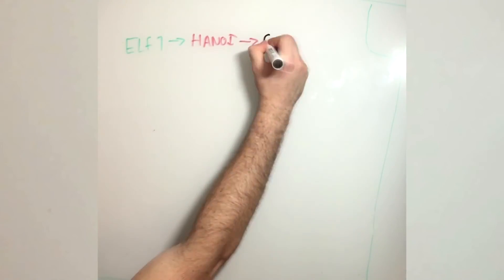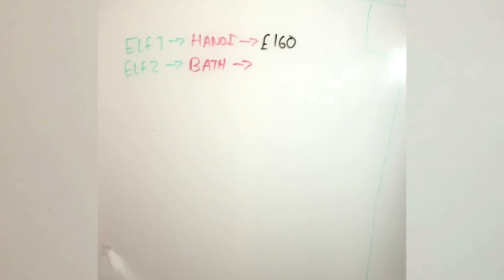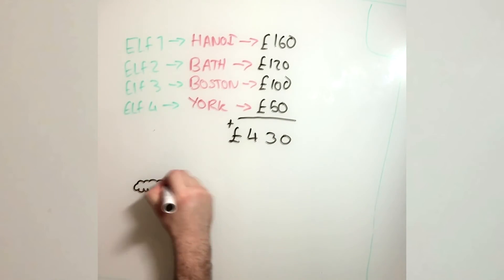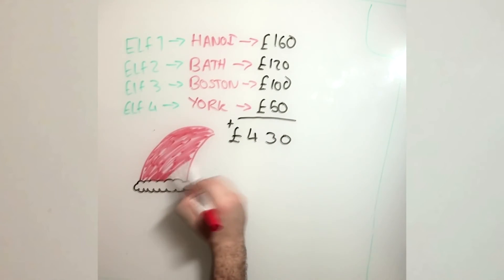So to summarize, Elf 1 goes to Hanoi, Elf 2 goes to Bath, Elf 3 goes to Boston, Elf 4 goes to York. And they're giving us a grand total sum of 430 pounds and one happy Santa.